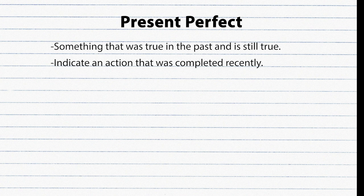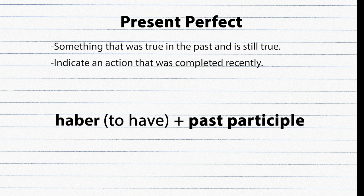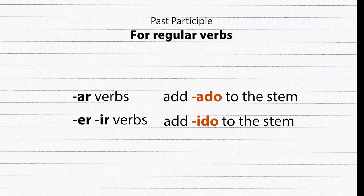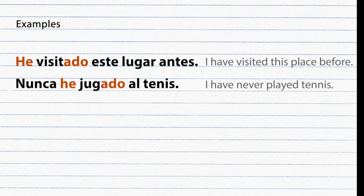Present perfect in Spanish is the same as the English present perfect. It is used to talk about something true in the past that is still true, or to indicate a recently completed action. It is formed by combining the verb 'haber' plus the past participle. The past participle is made by adding ADO to AR verbs and IDO to ER/IR verbs. Examples: He visitado este lugar antes. Nunca he jugado al tenis.